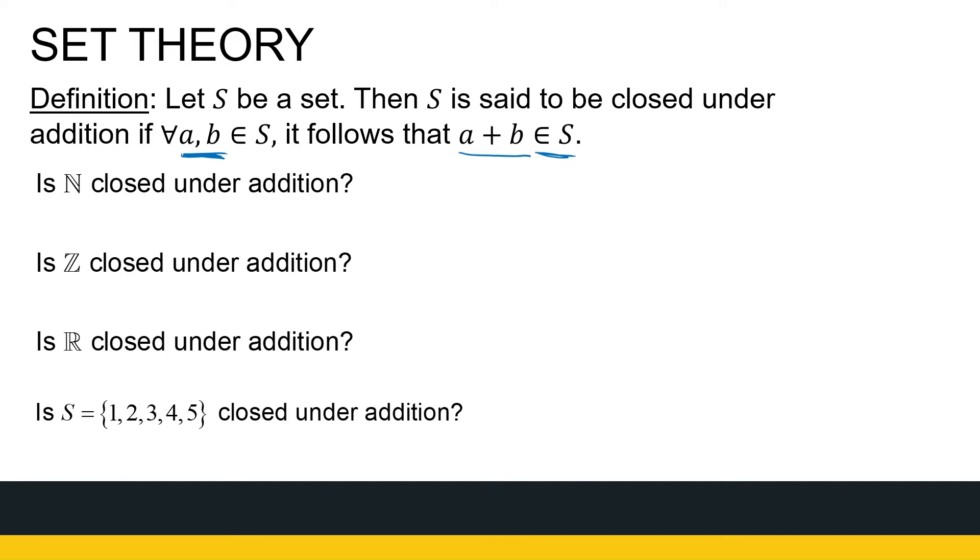So let's look at some sets we've seen before with numbers. Natural numbers, if I look at the natural numbers and I've got 1, 2, 3, 4, 5 and so on, all the way to infinity. If you take any two natural numbers and you add them together, do you again get a natural number? The answer is yes. So the natural numbers is closed under addition.